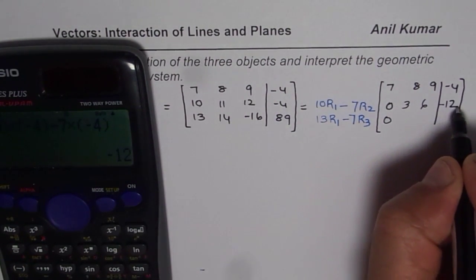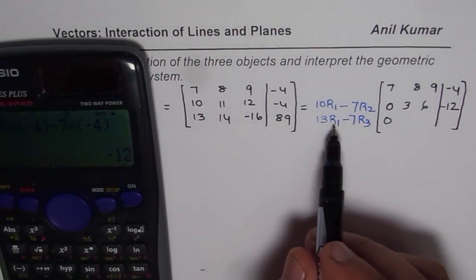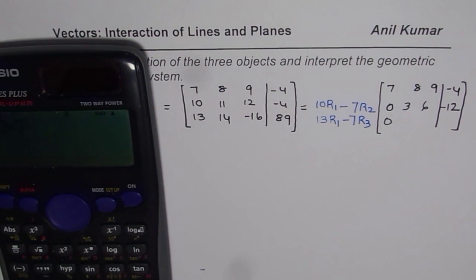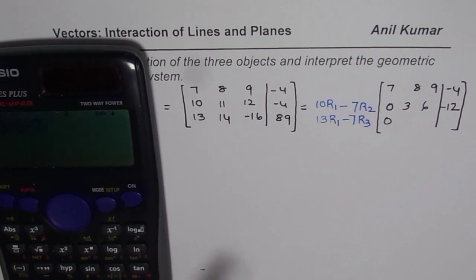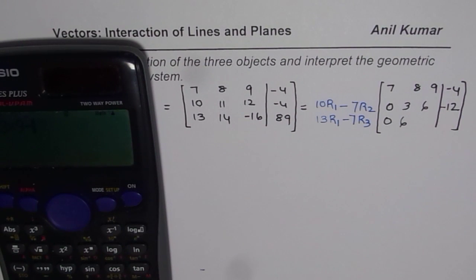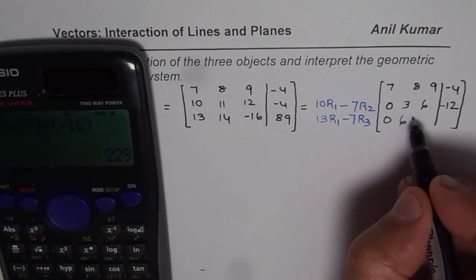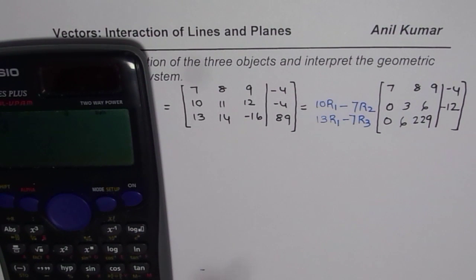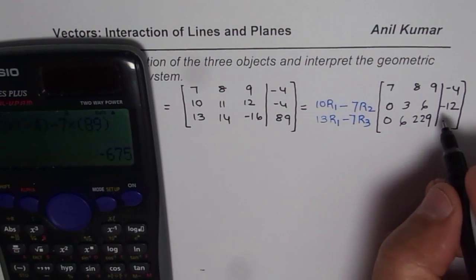For the last row, we do 13 times R1 minus 7 times R3. 13 times 7 minus 7 times 13 gives 0 as expected. Then 13 times 8 minus 7 times 14 gives 6. Then 13 times 9 minus 7 times minus 16 equals 229. And 13 times minus 4 minus 7 times 89 gives minus 675.